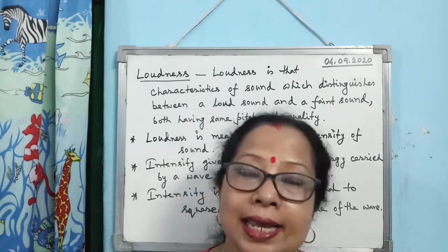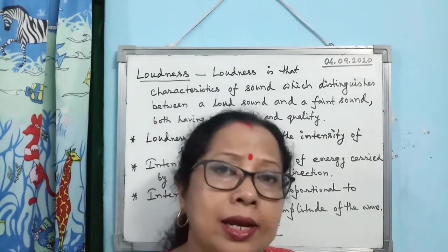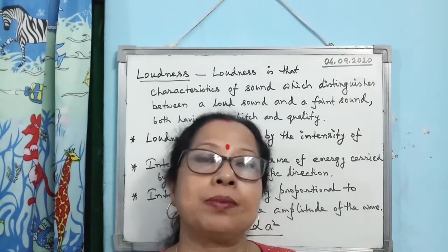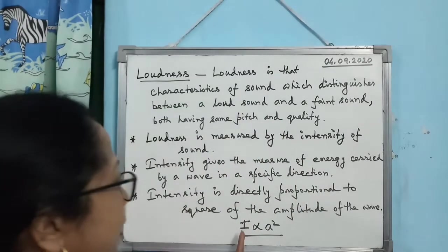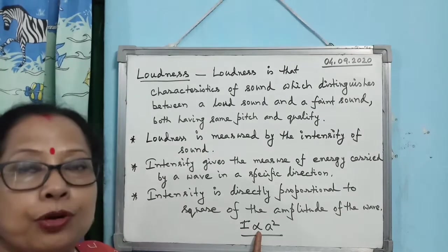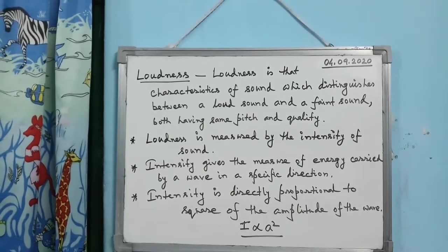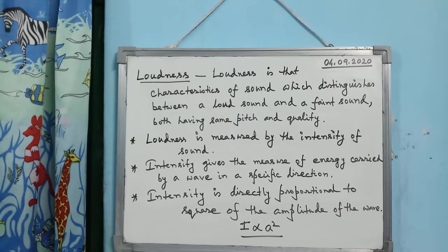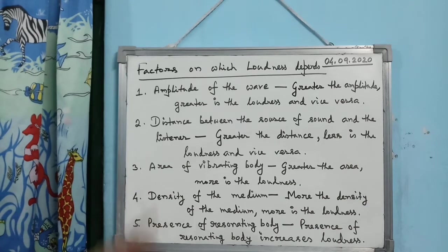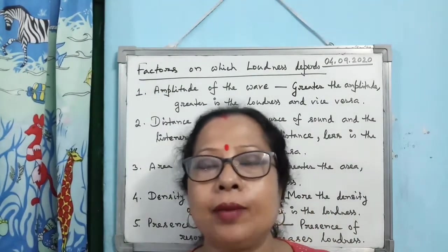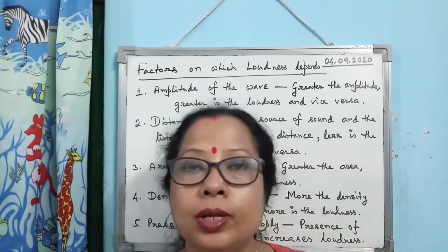Intensity, denoted by I, is directly proportional to the square of the amplitude of the wave. Amplitude is the maximum displacement of the vibrating body from its mean position in one direction. Because intensity is proportional to the square of amplitude, loudness also varies as the square of amplitude. Therefore, greater the amplitude, greater is the loudness, and vice versa.